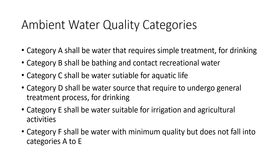Category A is water that requires simple treatment for drinking. Category B is water suitable for bathing and contact recreational use. Category C is water suitable for aquatic life. Category D is a water source that requires a general treatment process for drinking. Category E is water suitable for irrigation and agricultural activities. Category F is water with minimum quality that does not fall into categories A to E. Altogether, six categories are mentioned in this act.